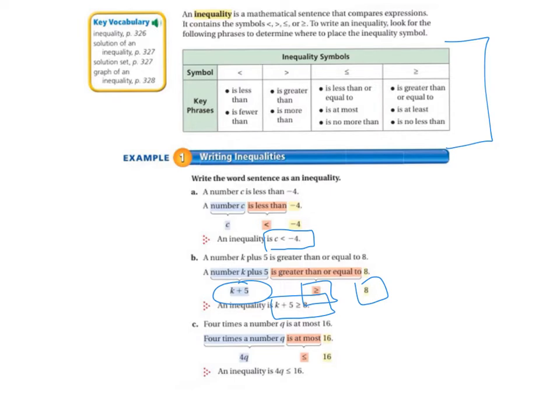Four times a number Q is at most 16. So we would write 4Q less than or equal to 16. So that would look like 4Q is less than or equal to 16.